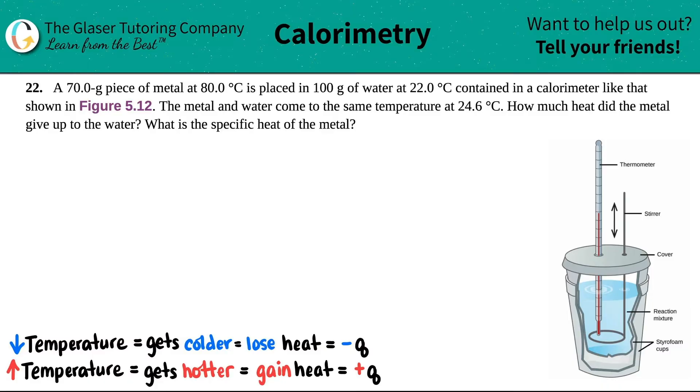Number 22. A 70.0 gram piece of metal at 80.0 degrees Celsius is placed in 100 grams of water at 22.0 degrees Celsius contained in a calorimeter like that shown in Figure 5.12, which is this picture right here. The metal and the water come to the same temperature, which is 24.6 degrees Celsius. Now the question says, how much heat did the metal give up to the water and then what's the specific heat of the metal?